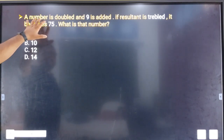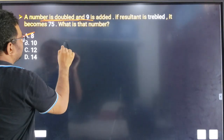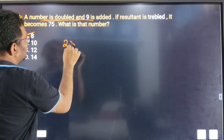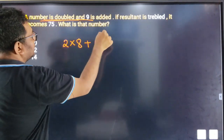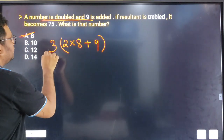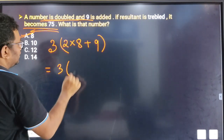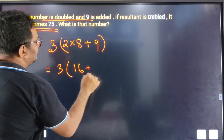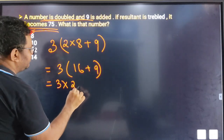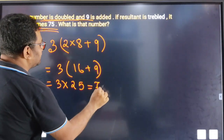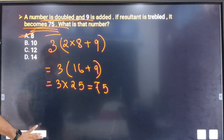If we double 8, we get 2 multiplied by 8, and 9 is added. Then if we triple it: 2 into 8 is 16, plus 9 is 25, then 3 multiplied by 25 equals 75. So the result is 75. That confirms the answer.